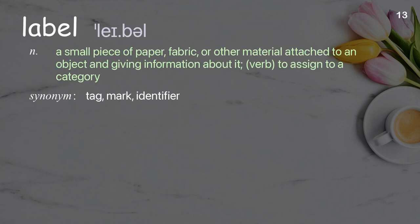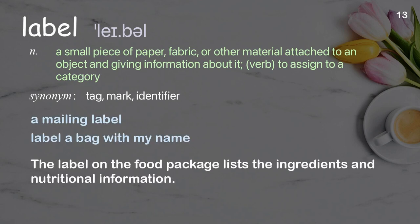Label: A small piece of paper, fabric, or other material attached to an object and giving information about it. Verb: To assign to a category. Examples: A mailing label, label a bag with my name. The label on the food package lists the ingredients and nutritional information.